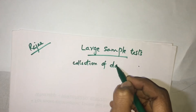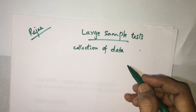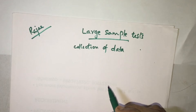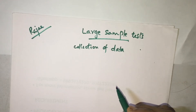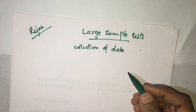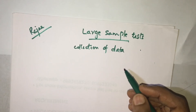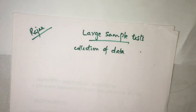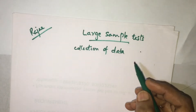Collection of data means collecting data for a statistical study. For example, suppose I want to calculate the mean marks obtained by engineering students in an exam — I have to collect data from so many students and so many sources. That process we call as collection of data.